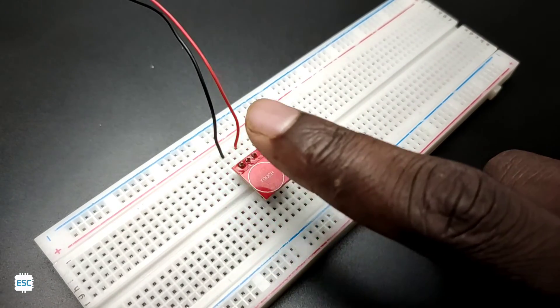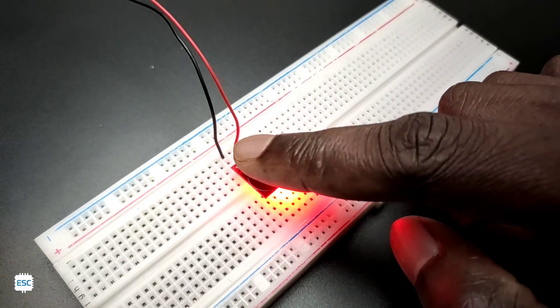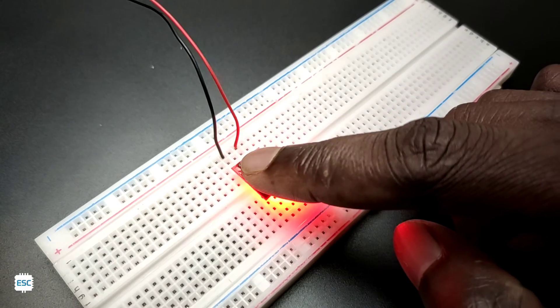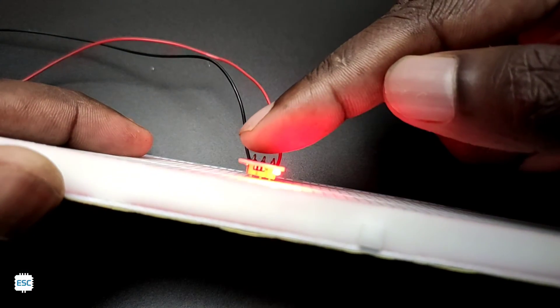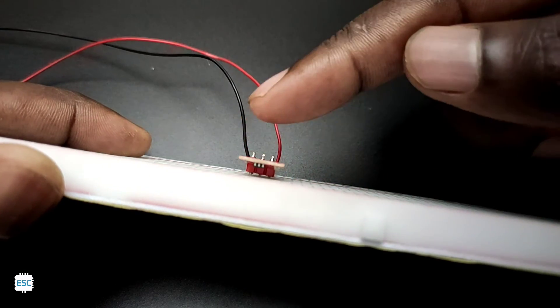You can see when I touch the sensor, the output LED turns on. As you can see, this sensor can precisely detect the presence of my finger. Now let's see the modes of this module.